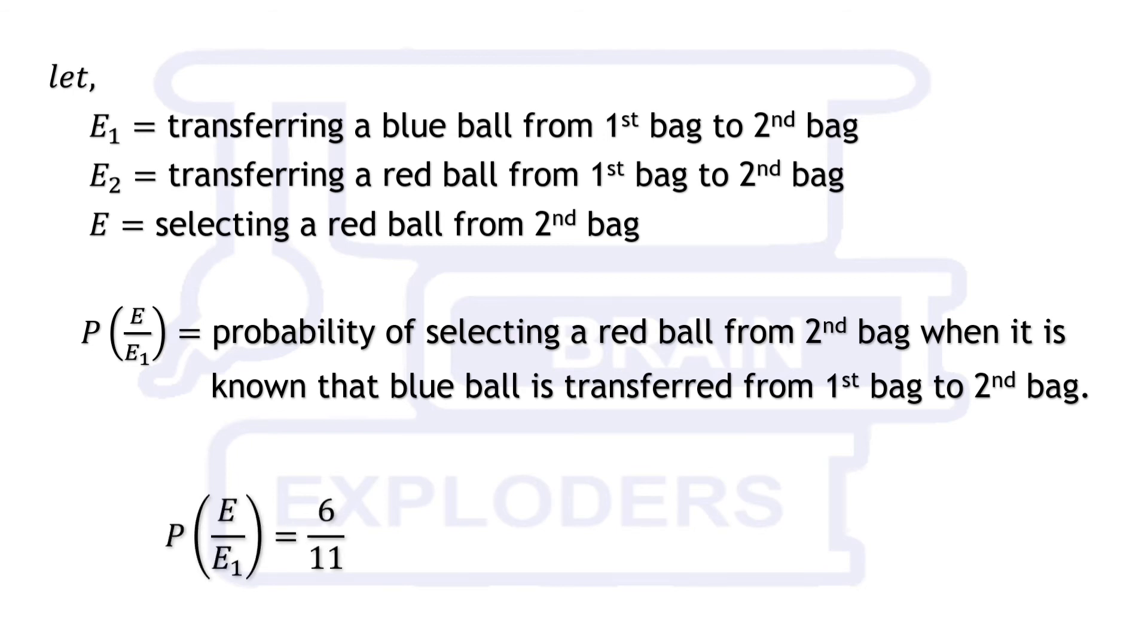In this case there are 11 balls in second bag out of which 6 are red. So P(E|E1) is equal to 6 over 11, similarly P(E|E2) is equal to 7 over 11.